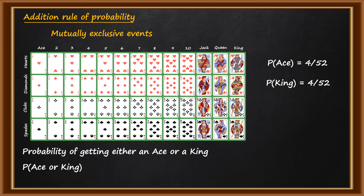Now, is it possible to get an Ace and a King at the same time? The answer is no. If you pick a single card, you cannot get an Ace and a King simultaneously — either you get an Ace or a King. So these two events are mutually exclusive. The probability of getting an Ace or a King is equal to 4 by 52 plus 4 by 52, which equals 8 by 52.